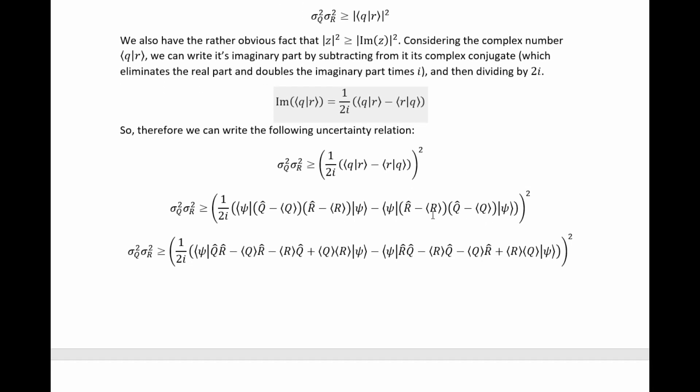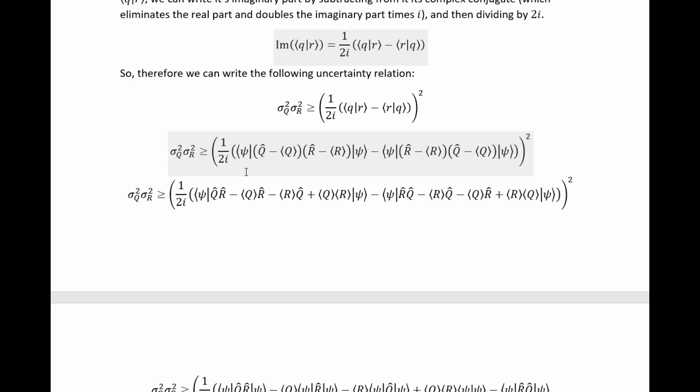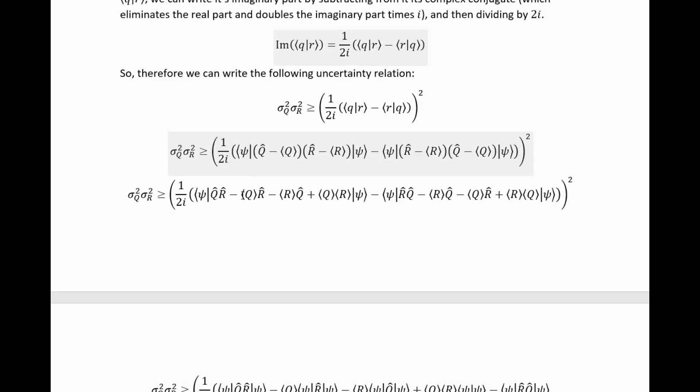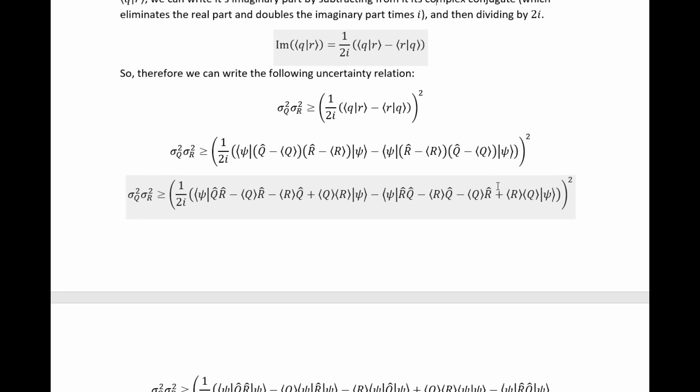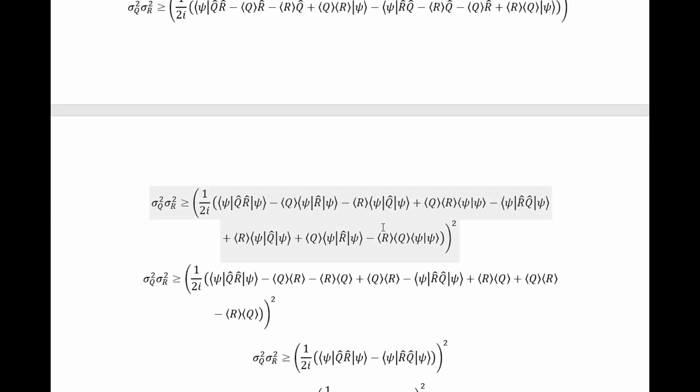Now, what we can do is we can insert the definition of these q and r states back in and start simplifying. So, first, if we substitute this in, we get this. Then, if we remember that operators don't commute, we can expand it out successfully like this. And then, we can distribute in these bra and ket vectors, and we ultimately arrive here.